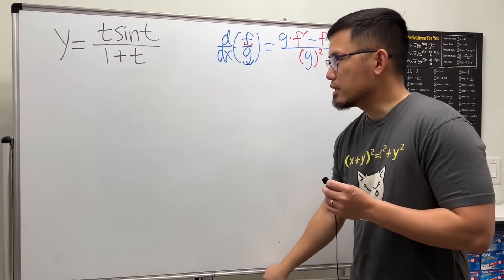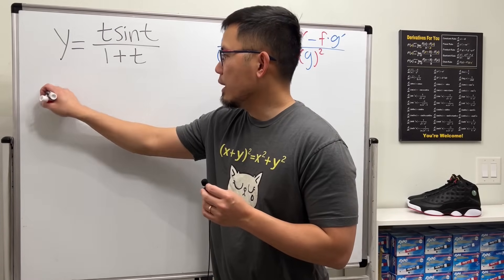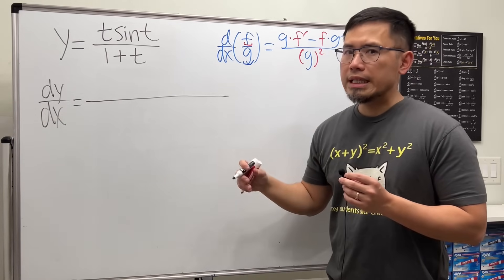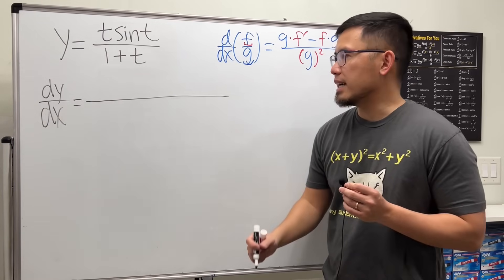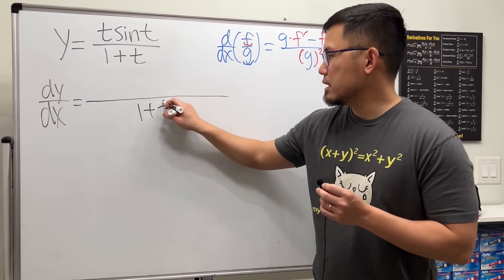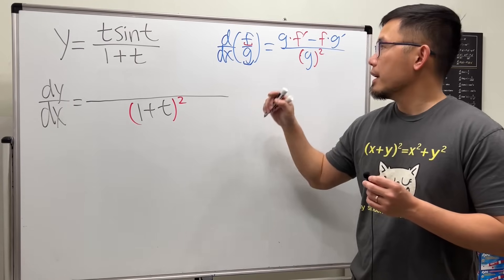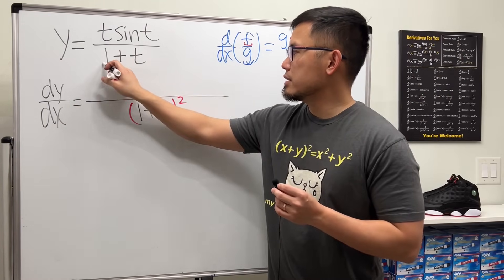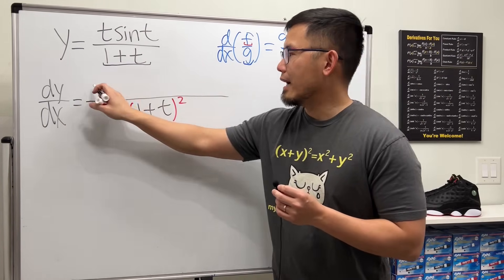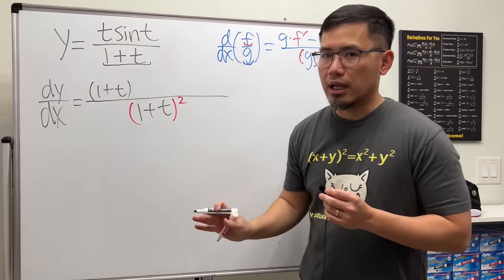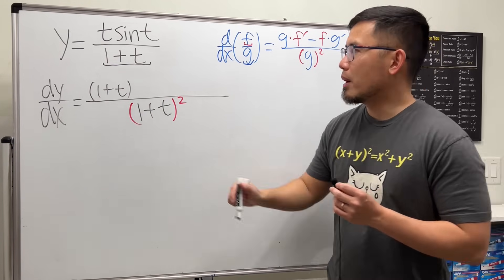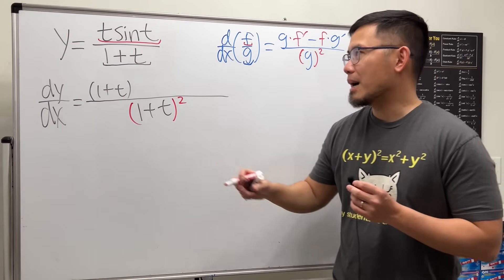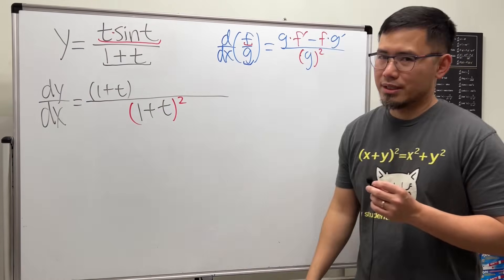So that said, let's go ahead. I will use dy/dx for the derivative notation and let's go ahead and square the denominator before we forget: 1 plus t, squared. Then I'm going to write down the bottom function right here. The bottom function is 1 plus t. Now the tricky part is how do we find the derivative of the top?